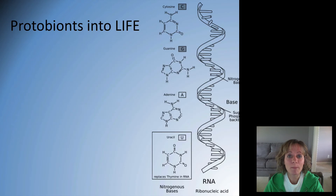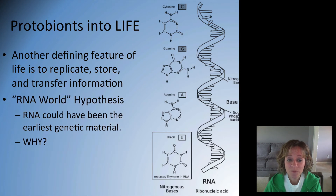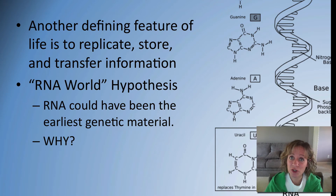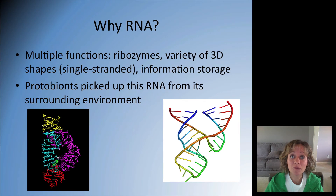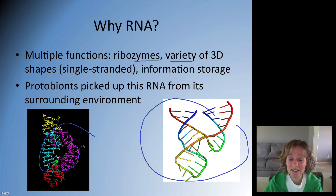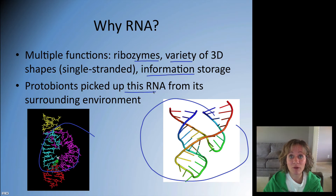We're going to turn these protobionts into actual life when they start to pick up nucleic acids. They have to be able to replicate, store, and transfer genetic information. The big hypothesis is that that nucleic acid was RNA — we call it an RNA world. RNA is believed to be first because it has multiple functions: it can be a ribozyme, which is an RNA enzyme that performs catalysis; it can form a huge variety of 3D shapes because it's single-stranded; and it stores information. The hypothesis is that protobionts picked up RNA from the surrounding environment and were then able to store, replicate, and transfer that information.